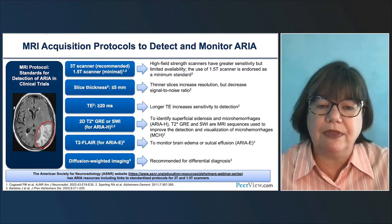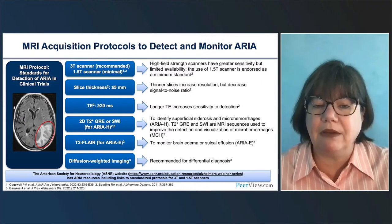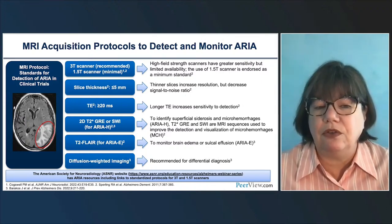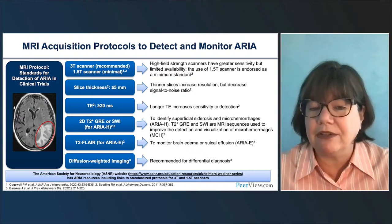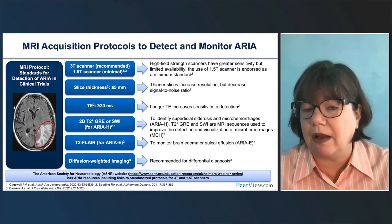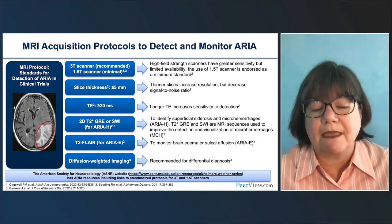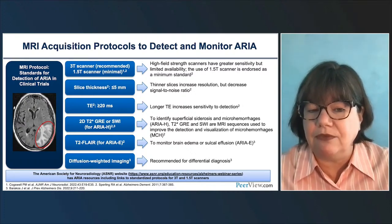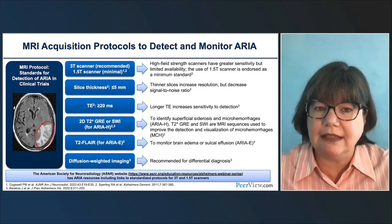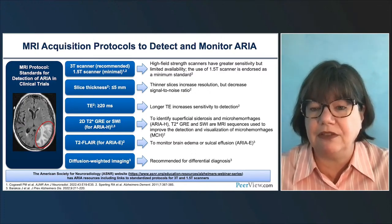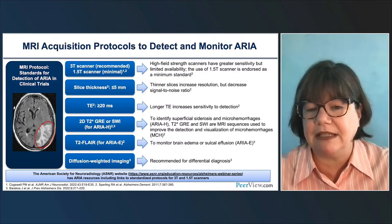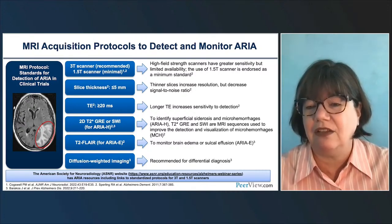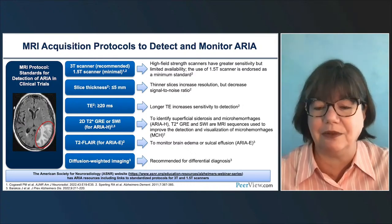The most important thing to be consistent with is the way we detect microhemorrhages. There are different techniques: traditional T2* type techniques, or more modern techniques such as susceptibility-weighted imaging (SWI) or SWAN on other platforms. We use FLAIR for edema and effusions, and diffusion for the differential diagnosis. The American Society for Neuroradiology has done a project with Siemens, GE, and Philips to establish standard protocols at 3T and 1.5T. Links to the ASNR website will be in your materials so you can download those protocols directly for your scanner.